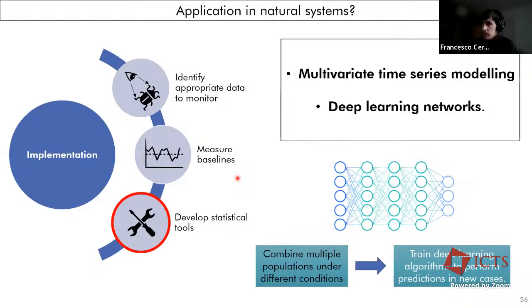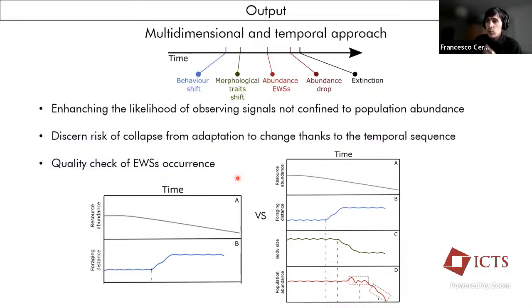Now, the output that comes from all of this, in our opinion, is that we can enhance the likelihood of observing a signal that is not limited to the abundance, which is almost the last threshold before the collapse can start. And also we can discern the risk of collapse from when a population is just adapting to the global change. Because if we just monitor the behavior and we see that the behavior changes after some time due to the stress, but then it stabilizes, we could say, okay, now this population is good. It changed the behavior, but now it can cope with the increasing stressor level. But instead, it's the multidimensional approach that tells us, okay, we are seeing sequential stress signals, which acts as a quality check of the early warning signals if they then happen to be measured.